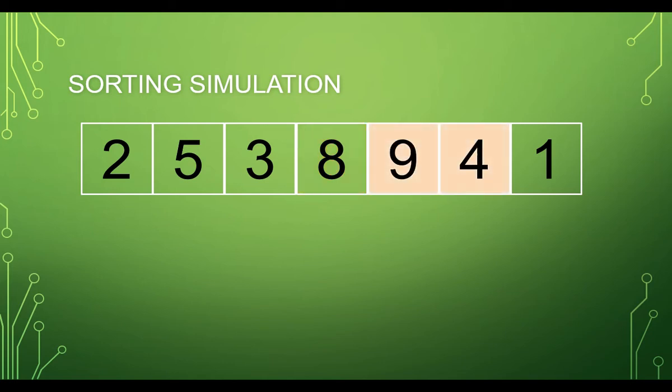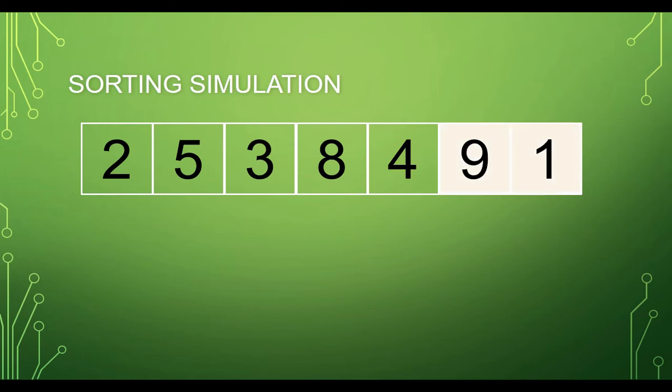Next is to compare the fifth element with the sixth element. Since the fifth element is greater than the sixth element, swapping is necessary. The 9 will be moved to the right side and the 4 will be moved to the left side. And finally, we compare the sixth element with the last element.